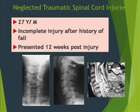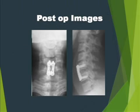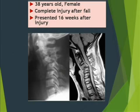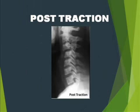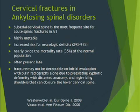In extension distraction injuries, if there is no translation and minimal disc opening, one may manage conservatively. If there is a significant disc injury, anterior cervical discectomy, fixation, and fusion may be needed. If there is translation and it is not in the junctional region, anterior cervical discectomy, fusion, and fixation is appropriate.